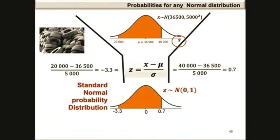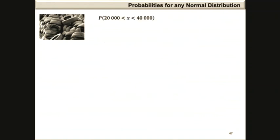On the standard normal probability distribution graph, this is indicated as the shaded area between minus 3.3 and 0.7. Therefore, the probability that x is between 20,000 and 40,000 is equivalent to the probability that z is between minus 3.3 and 0.7, which equals the probability that z is less than 0.7 minus the probability that z is less than minus 3.3.